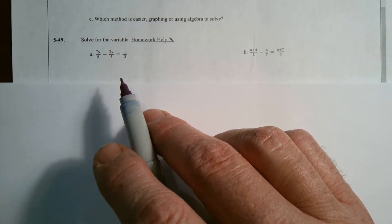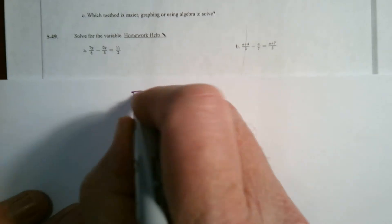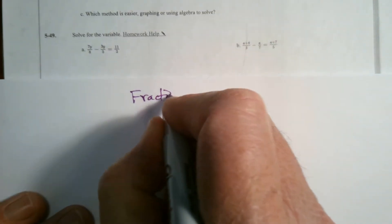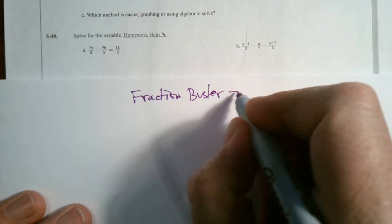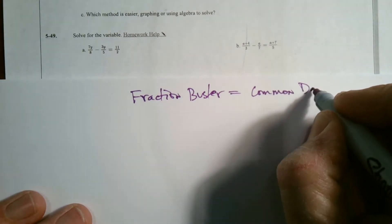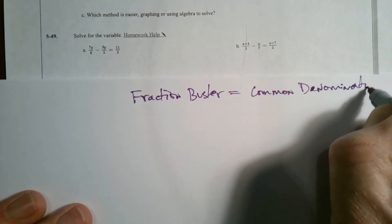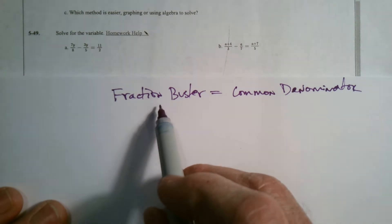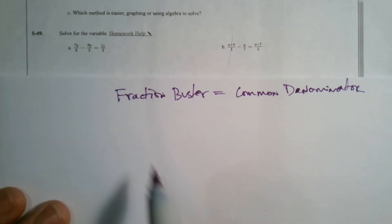That being said, we're going to utilize the tool called fraction busters. As a reminder, what is a fraction buster? A fraction buster is the common denominator. So if you can find the common denominator, then you have the fraction buster. The fraction buster is the common denominator.